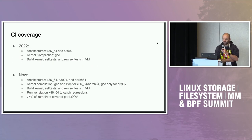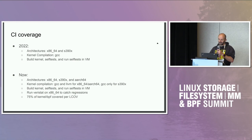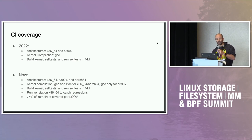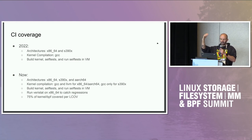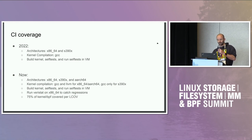So what has changed since 2022? Last year we were running CI for x86-64 and s390x, only building the kernel with GCC, building self-tests and running the self-tests in the VM. This year we've added ARM64, and we also build the kernel for x86-64 and ARM64 with both GCC and LLVM. We still build and run the kernel self-tests, but we also recently added support for various stats — added by Edward Zingerman — which allows catching regressions by running self-tests from the previous branch BPF head build against the local PR. At the moment, about 75% of the kernel BPF directory is covered by tests.